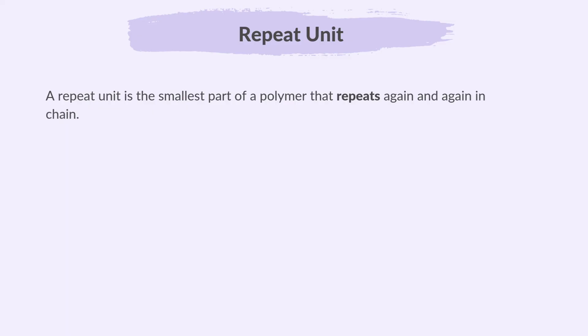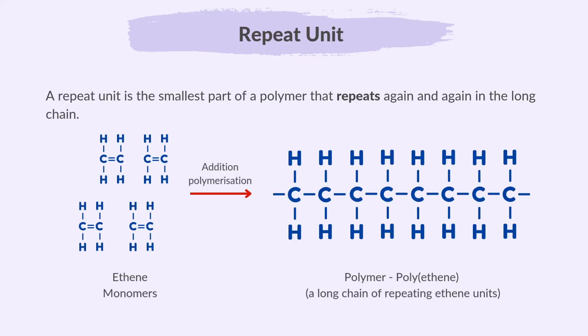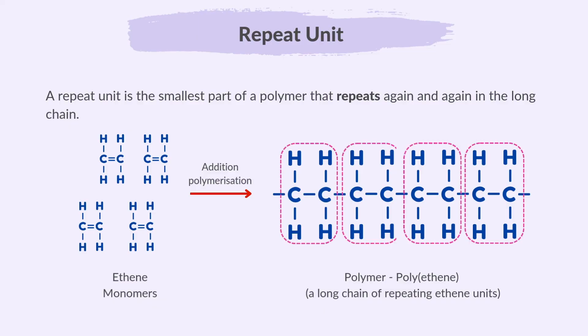A repeat unit is the smallest part of a polymer that repeats again and again in the long chain. In addition polymerization, the repeat unit is the monomer but with its double bond broken. So in our previous example of polyethene, this is the repeat unit.